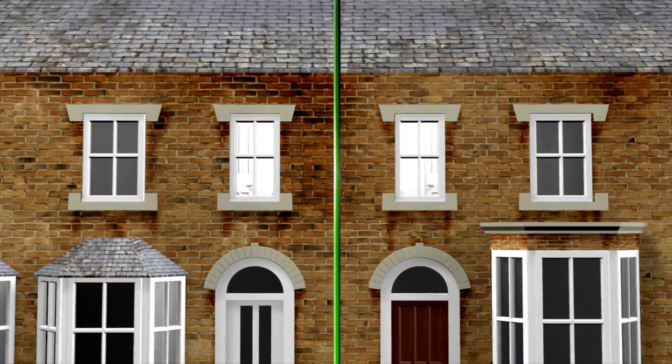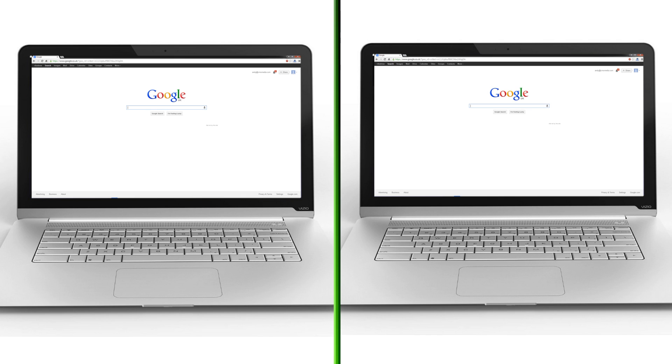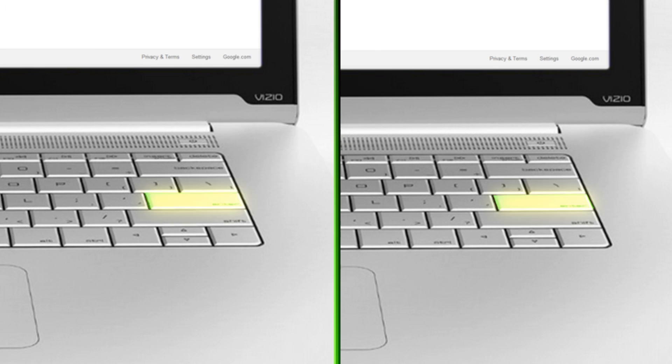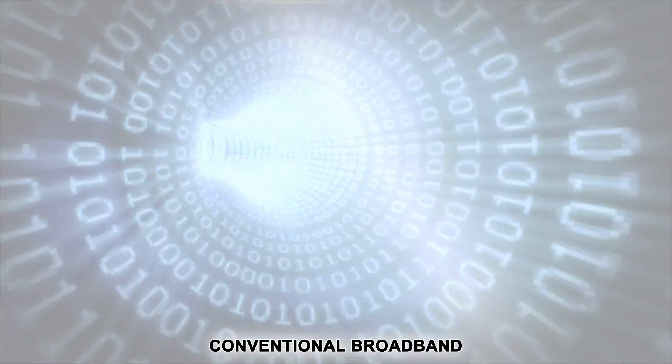Traditional broadband follows the well-trodden route to your nearest exchange. The further you are from this exchange, the slower your connection will be.